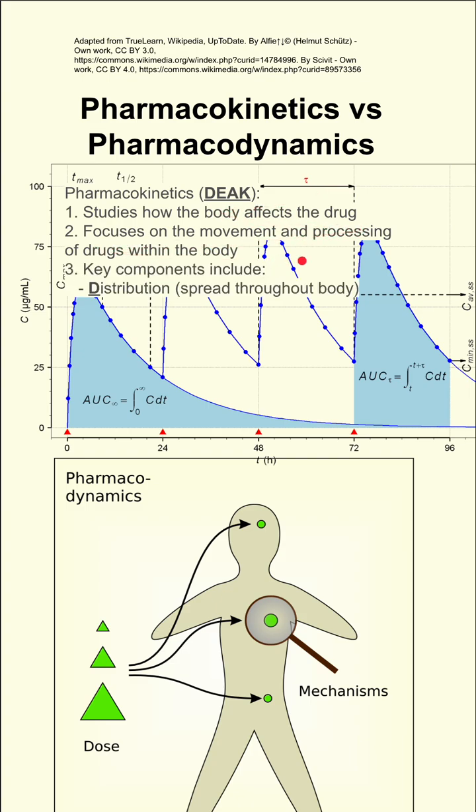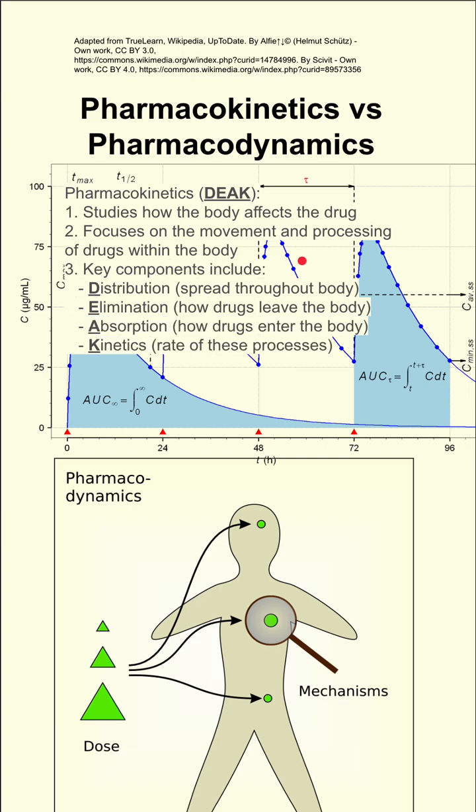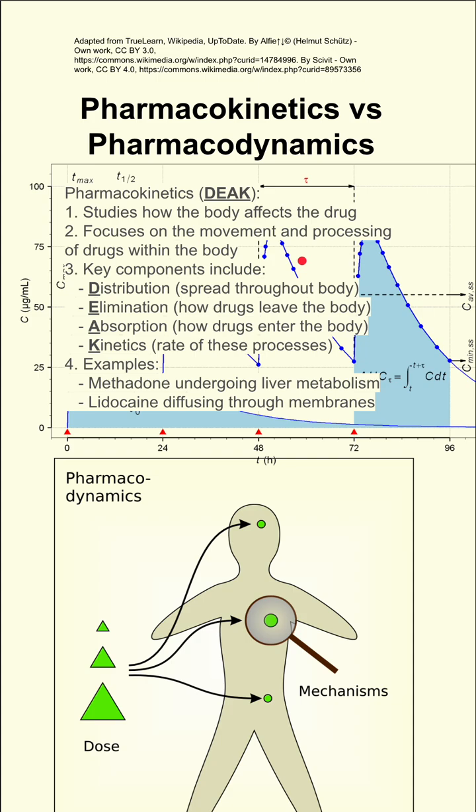Some key components include the distribution of the drug, elimination of the drug, absorption of the drug, and the kinetics of the drug. Some examples include methadone undergoing liver metabolism, lidocaine diffusing through membranes, and thiopental redistributing in the brain.